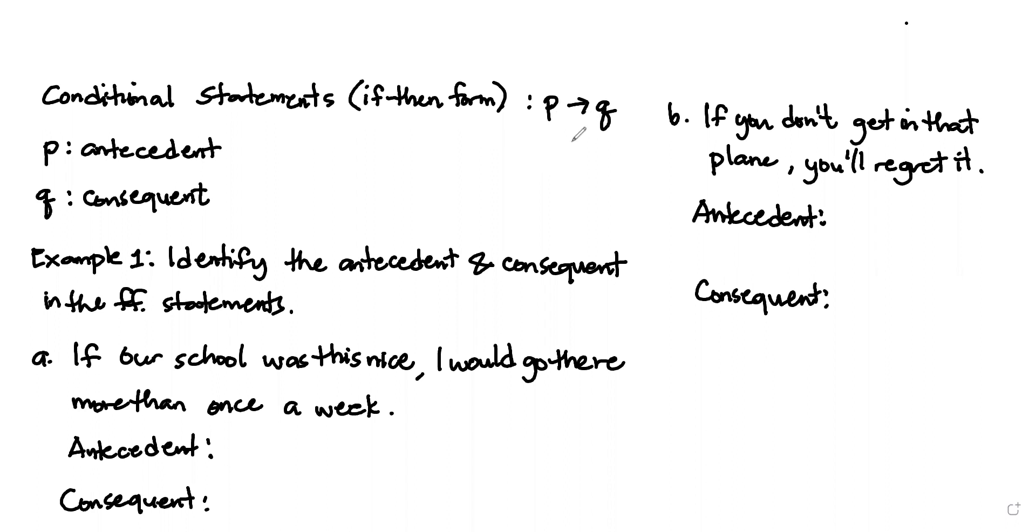This is how we denote the conditional statement. If P then Q will also denote P implies Q, where P is the antecedent and Q is the consequent. Always remember that for the antecedent and consequent, the answer should always be a statement. So let's have an example.